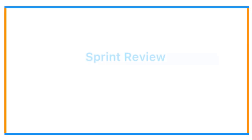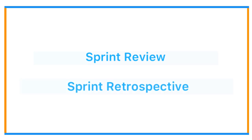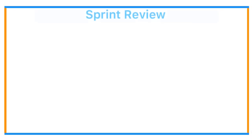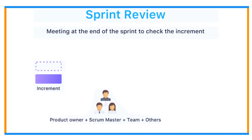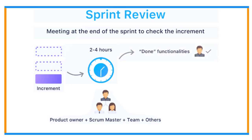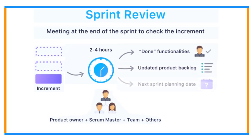Our final topic is the difference between sprint review and sprint retrospective — these two almost look the same, but there is a difference. The sprint review is a collaborative meeting between the product owner, team, Scrum master, and other stakeholders. It is equivalent to a user acceptance test, where the project team demonstrates the results of the work done in the sprint and the product owner and stakeholders accept the work or not. In the screen we can see what is done after a sprint meeting — they discuss done functionalities, updated product backlogs, etc.